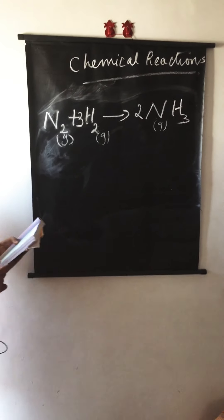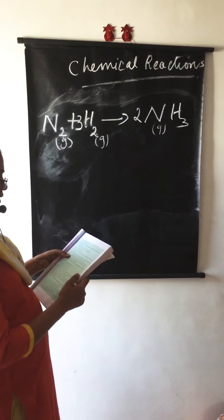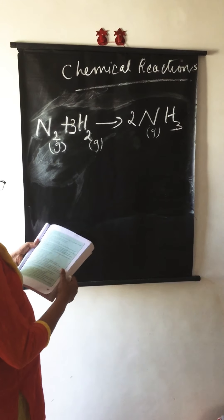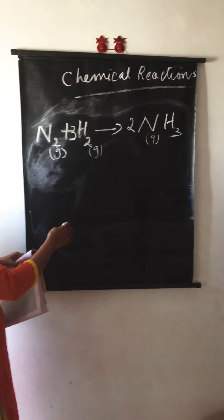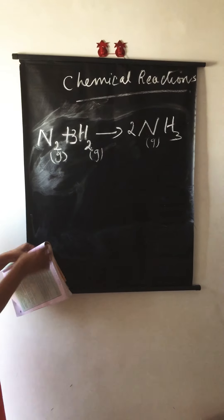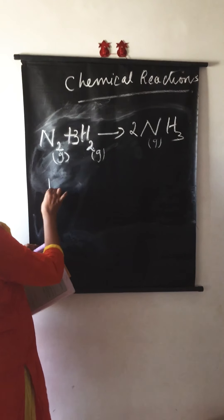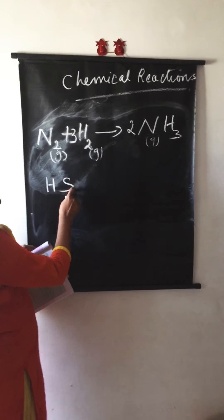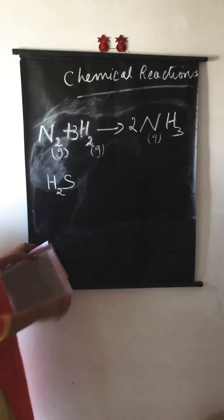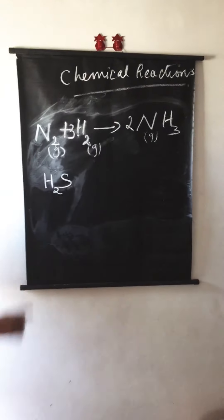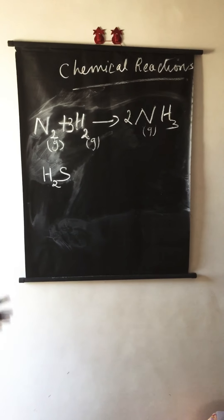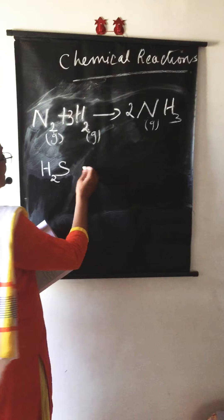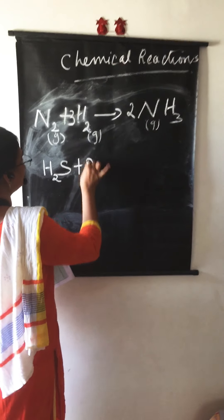Second equation: hydrogen sulfide gas burns in air to give water and sulfur dioxide. If you don't know the formula of hydrogen sulfide — hydrogen and sulfur. The valency of sulfur is 2, written under hydrogen, and hydrogen's valency is 1. So H2S is the formula for hydrogen sulfide. It is burning in air, so: H2S + O2.